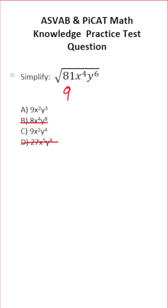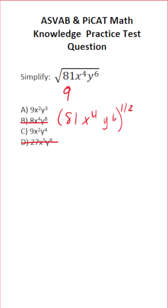Let's rewrite this square root using an exponent, which will make simplifying x to the 4th and y to the 6th much easier. We're going to write this as 81 x to the 4th y to the 6th, all raised to the 1 half power. When you raise something to the 1 half power, that means you take the square root of it. The square root of 81 is 9, so we've handled that already.